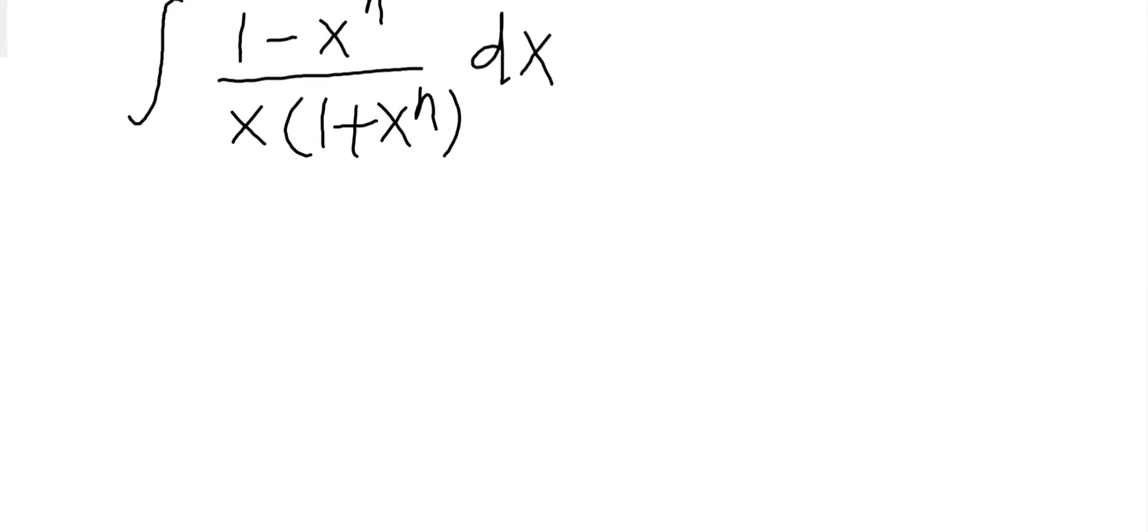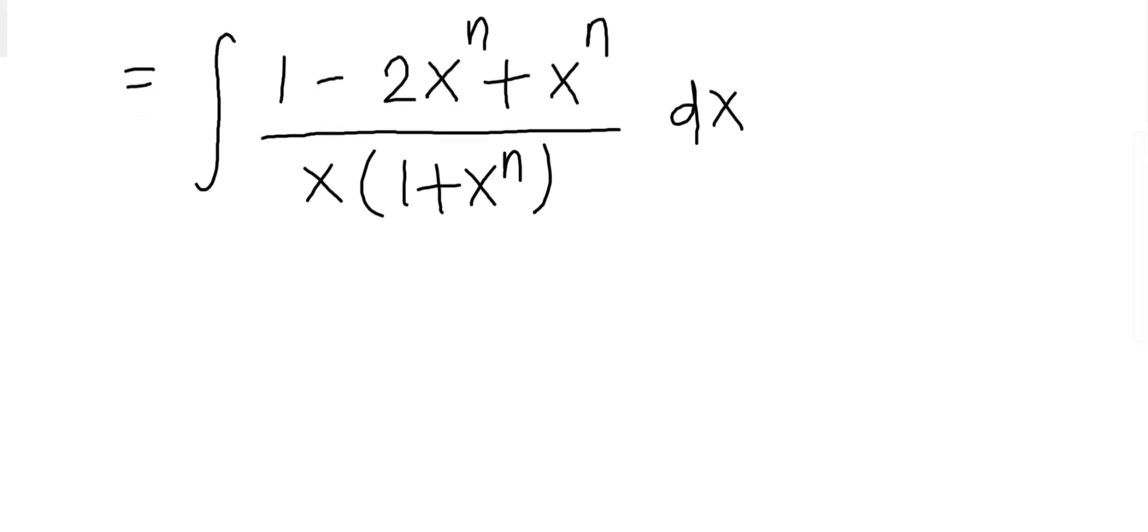First, let's simplify this expression. I'll expand (1 - x^n)^2 = 1 - 2x^n + x^2n. This is the same as (1 - x^n)^2 divided by x(1 + x^n) dx. Then let's rearrange it as (1 + x^2n - 2x^n) divided by x(1 + x^n) dx.